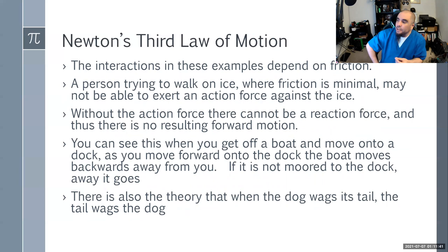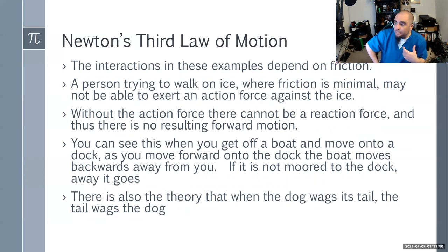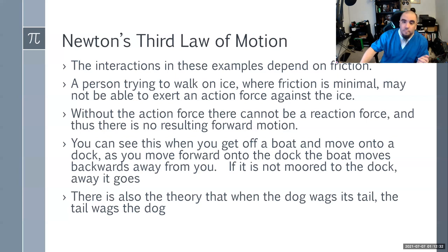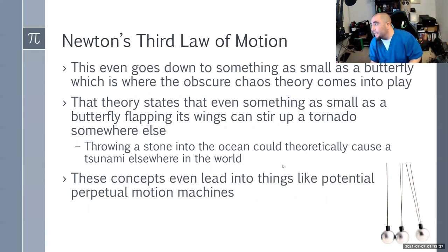These interactions involve friction. If a person tries to walk on an icy surface where friction is minimal, they may not be able to exert enough force to walk, because they'll be slipping. Without that action force to push them forward, there is no reaction force and no forward motion. You can also see this when stepping off a boat onto a dock — as you move forward, the boat moves backwards. Even a dog wagging its tail, the tail wags the dog, extending all the way to the butterfly effect.